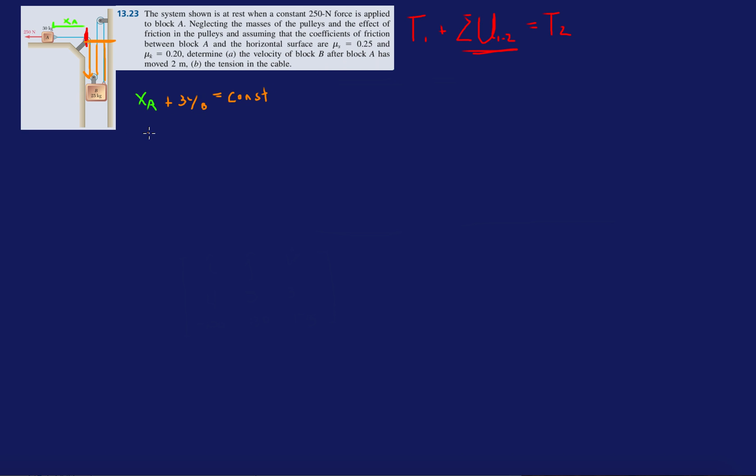Then if we just take a couple time derivatives we have v_A, right, derivative of position gives you velocity. So then we have 3v_B equals zero, derivative of constant is zero. And then another derivative gives us a_A + 3a_B equals zero.